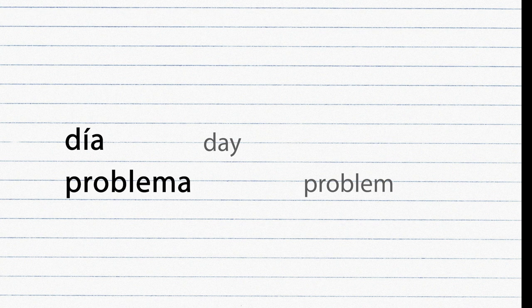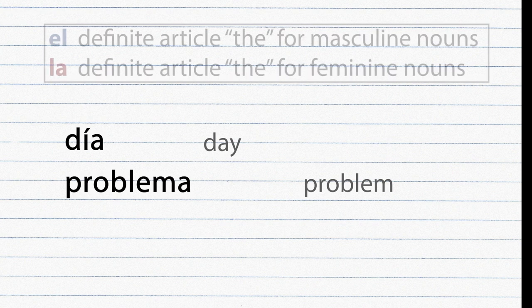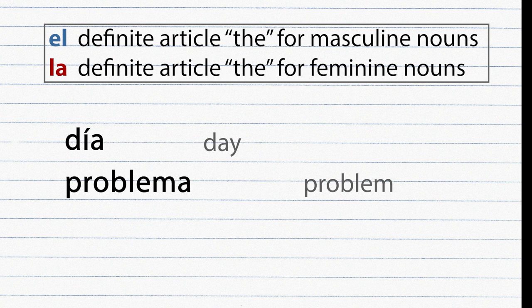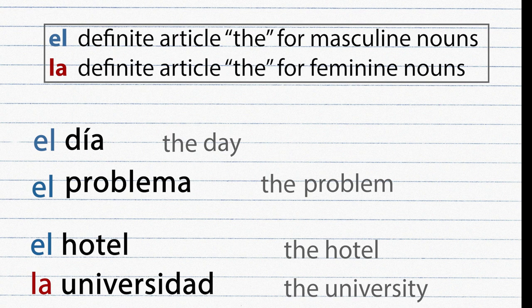That's why when you learn a new noun it's good practice to also learn its definite article: El or La. El is the definite article 'the' for masculine nouns; La is the definite article 'the' for feminine nouns. So 'el día' tells you día is masculine. The definite article helps you remember the gender of nouns that don't end in A or O.